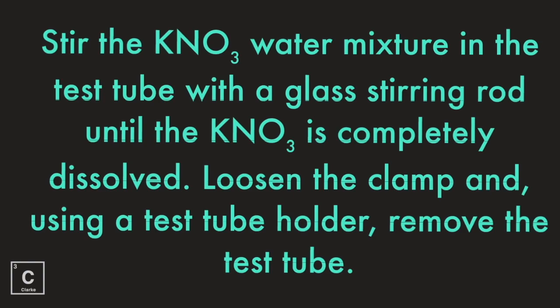Stir the potassium nitrate and water mixture in the test tube with a glass stirring rod until the potassium nitrate is completely dissolved — it has to be completely dissolved, there can't be any particles in the bottom. Loosen the clamp and, using a test tube holder, remove the test tube.